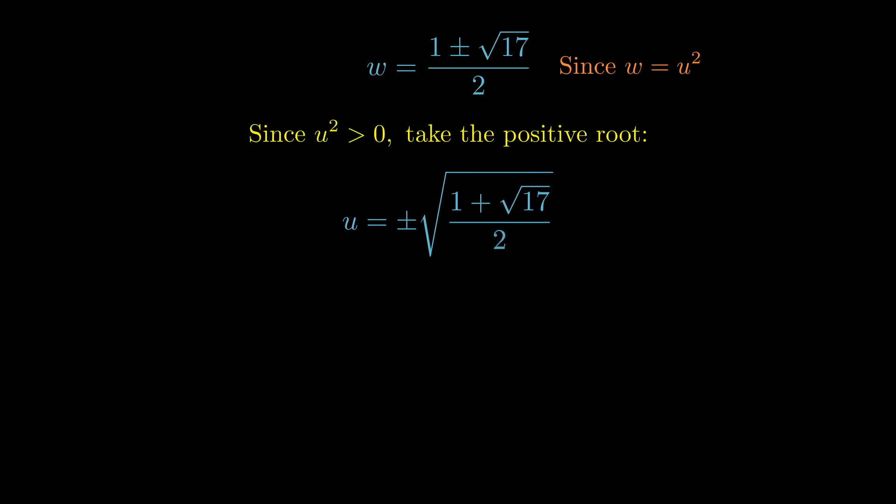w was u squared. And since u squared we're taking to be positive, we're only going to take the 1 plus root 17, or w. But u is still plus or minus, taking that square root.